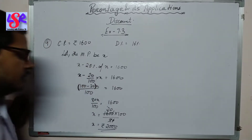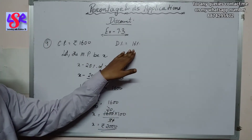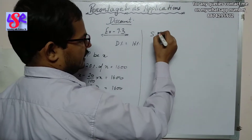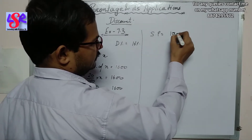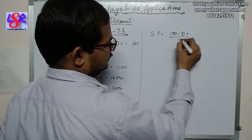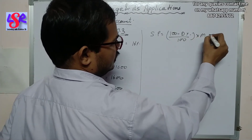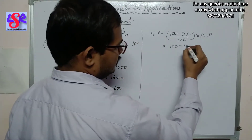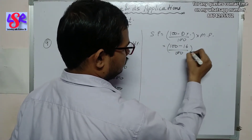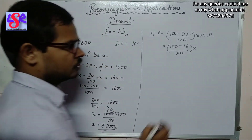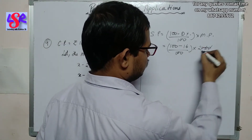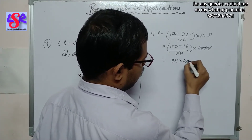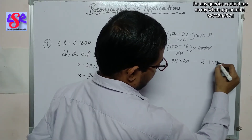Now, since the discount percent is 16%, we find the selling price using: SP = (100 − discount%) / 100 × MP = (100 − 16)/100 × 2000 = 84/100 × 2000 = rupees 1680.